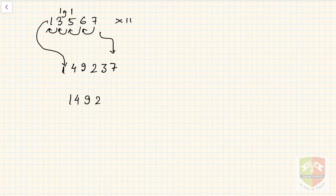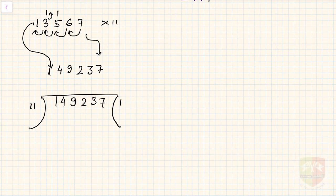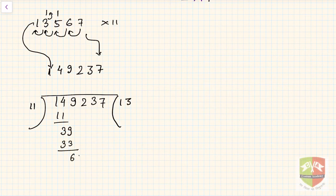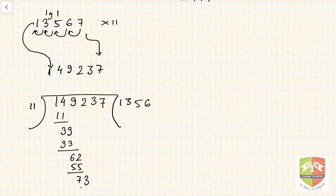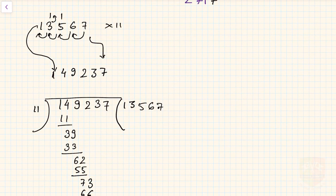Let us verify: divide 149237 by 11. Checking step by step through the long division, we get back 13567 — confirming our answer is correct. This shows how easily you can multiply any number by 11 using this technique.